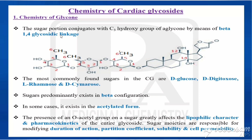The glycosidic linkage is beta 1,4. Here the first position connects to the fourth position of the next sugar — that is the beta 1,4 glycosidic linkage. The example shown here is digoxin, and this is the structure for digoxin, which is an example of a cardiac glycoside.